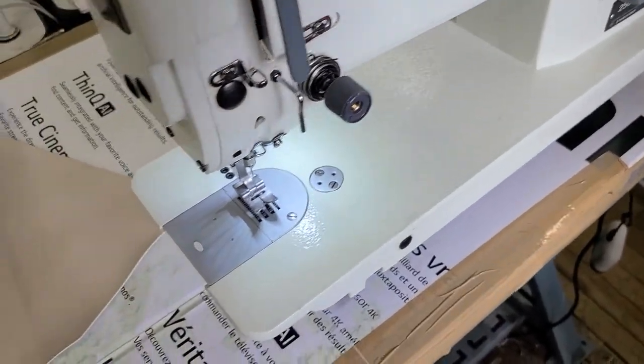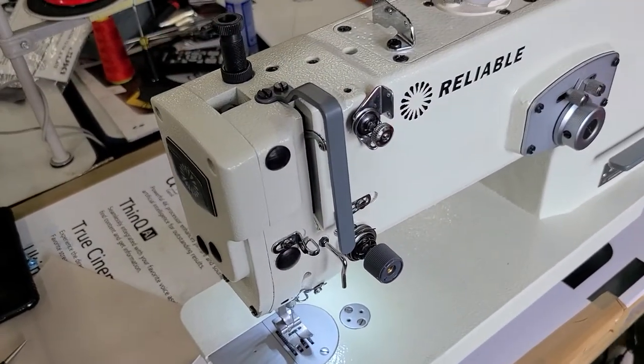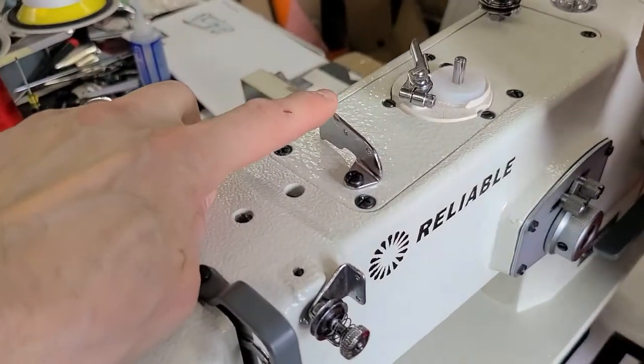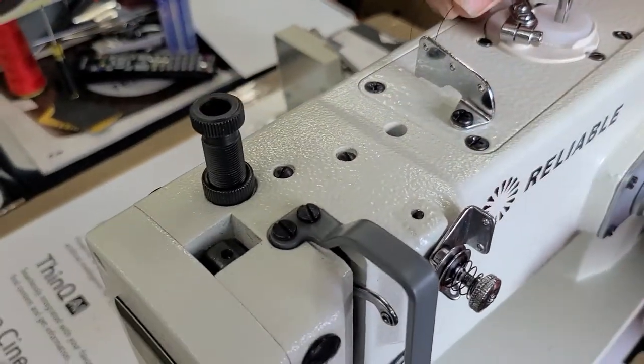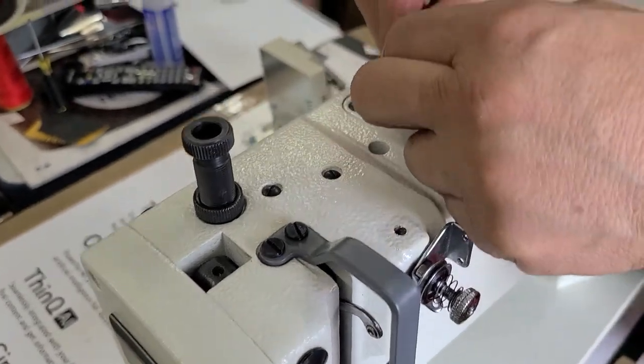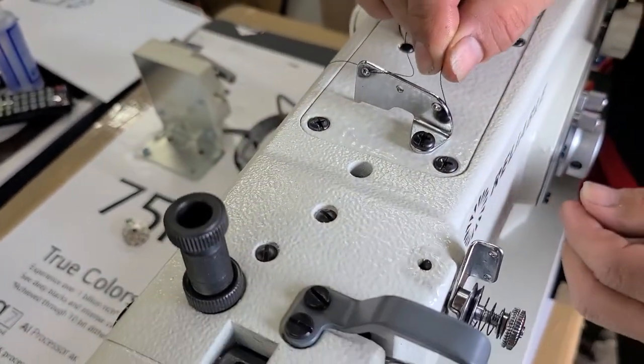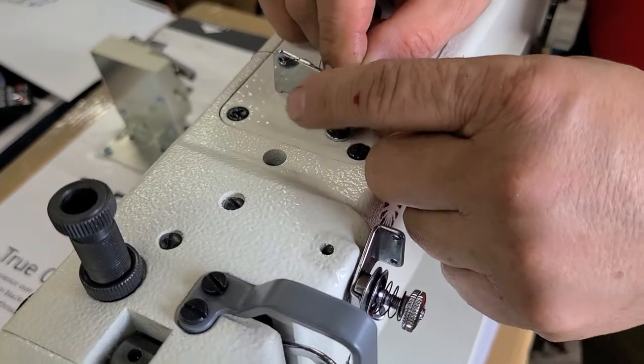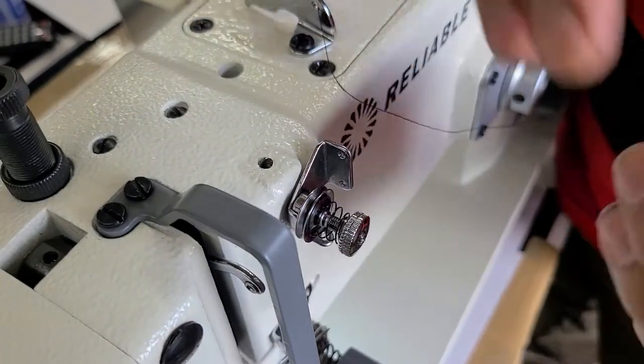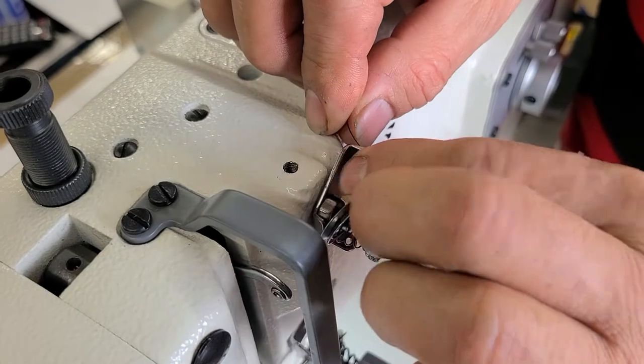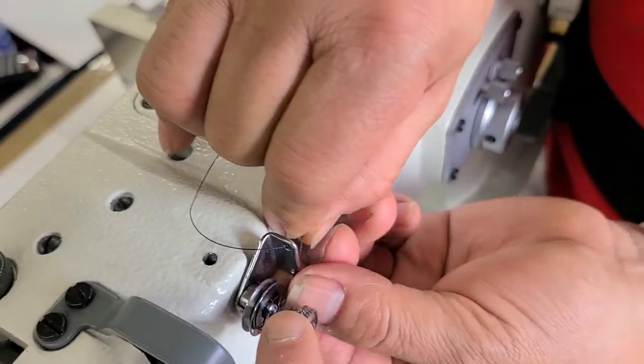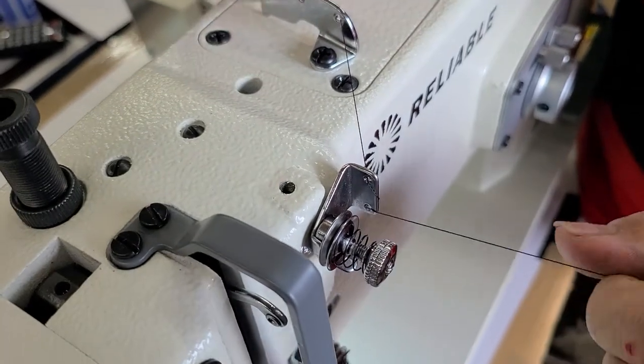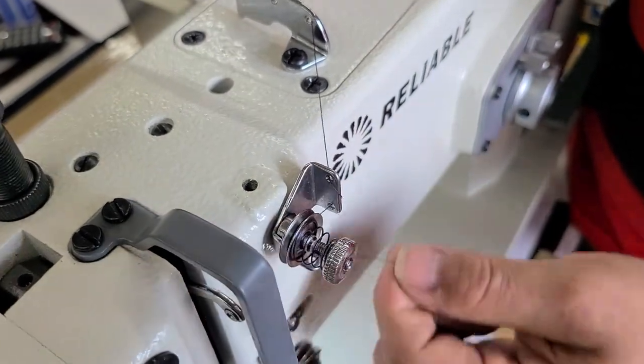Okay, so next I'm just going to show you how to thread the machine. So this guide, you don't have to go through all these holes. You can go through one, two, it's up to you. Jose is going to make like a little S and go through two of them. Same with this guide. You don't have to go through both, but you can go through them and make another little S. This is a pre-tensioner. You don't need to tighten this. Just a guide.